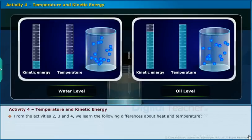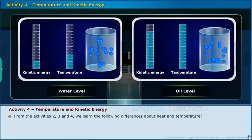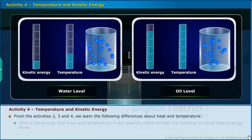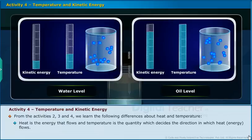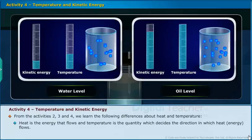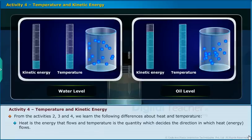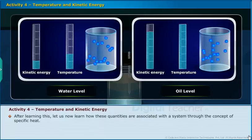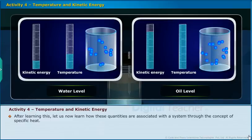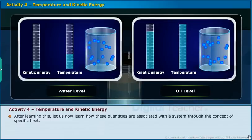From Activities 2, 3 and 4, we learn the following differences about heat and temperature: heat is the energy that flows, and temperature is the quantity which decides the direction in which heat energy flows. After learning this, let us now learn how these quantities are associated with the system through the concept of specific heat.